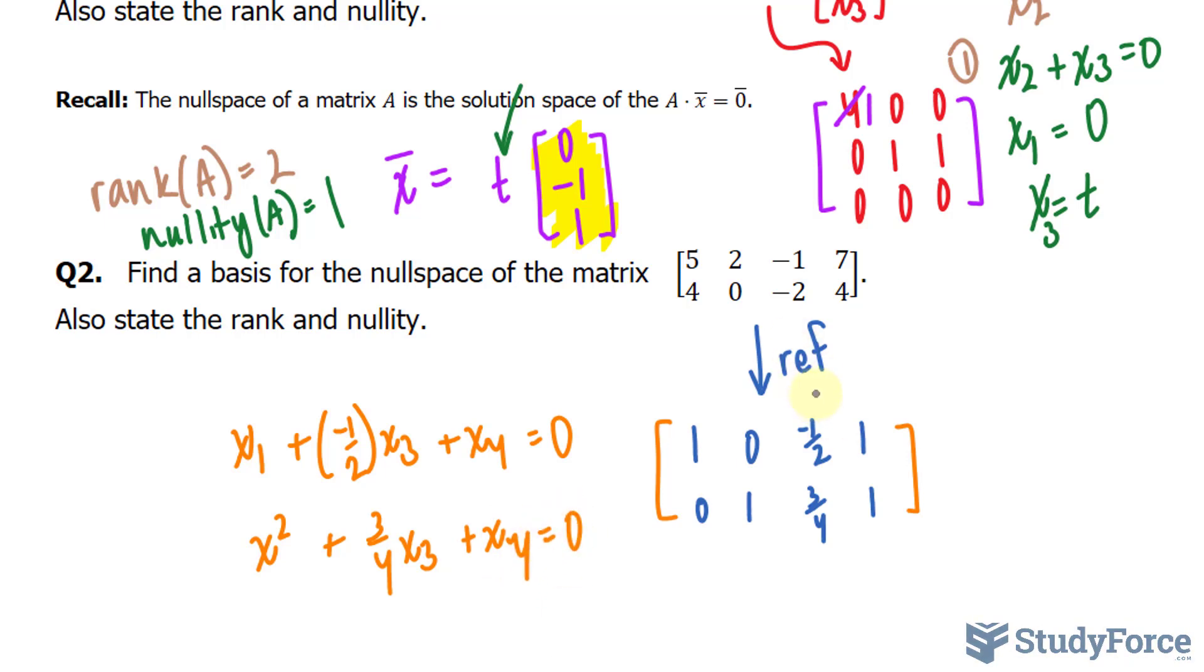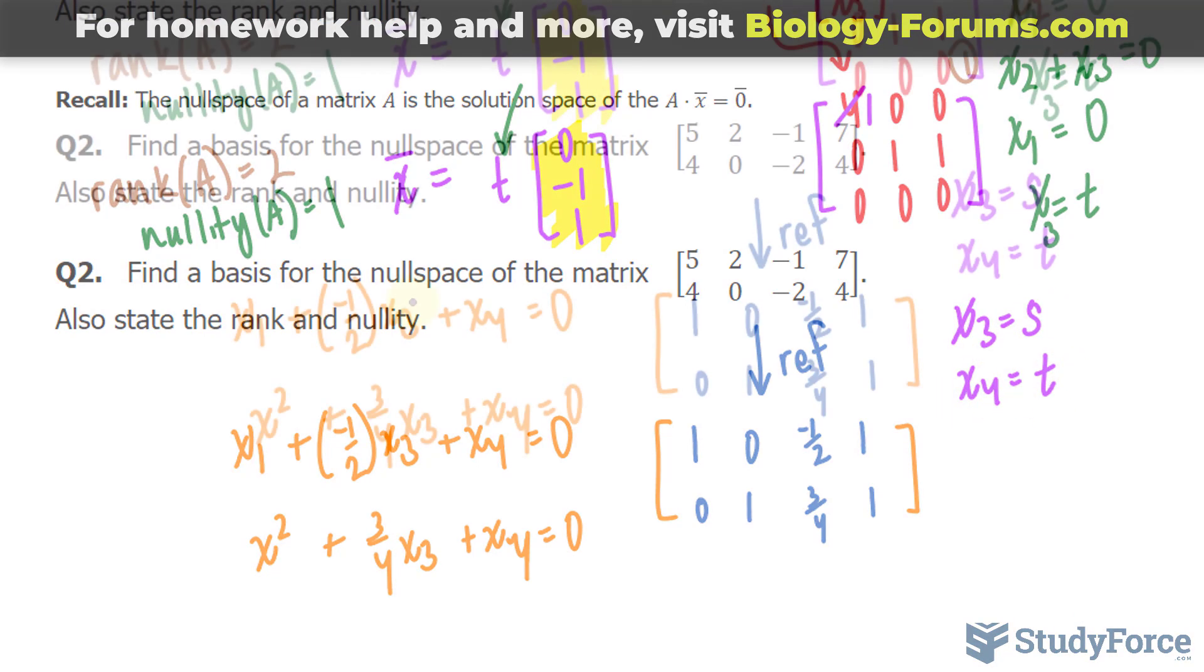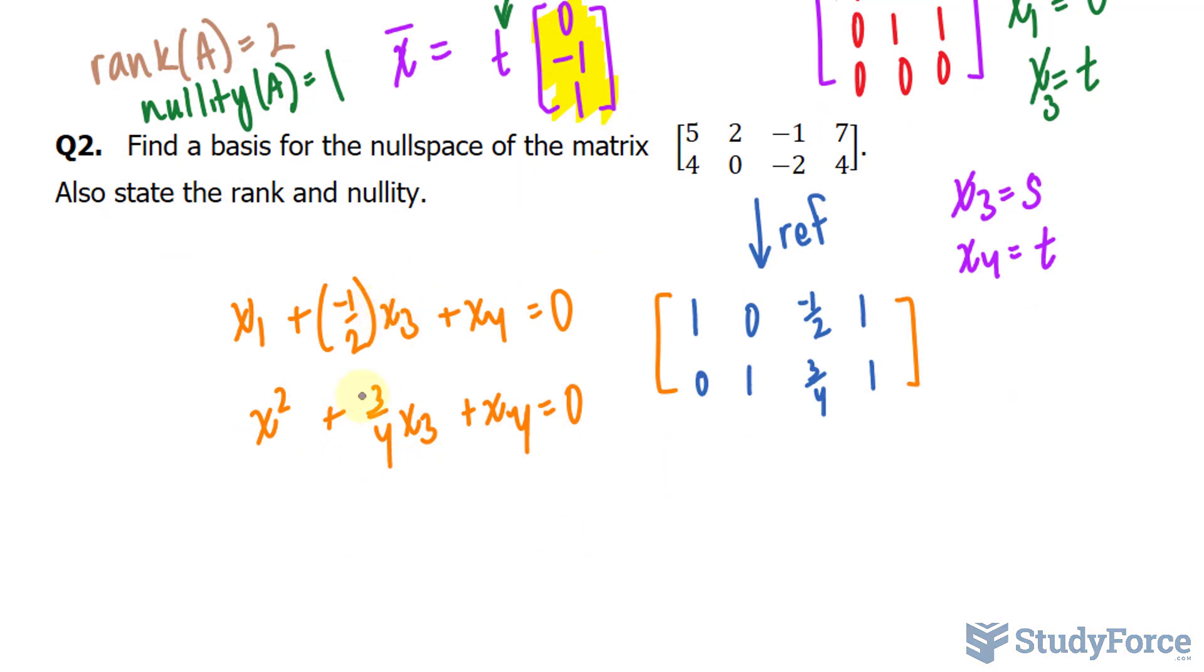The parameters here will be for this column and this column. So we'll call x sub 3 equal to s and x sub 4 equal to t. So that makes this right here, s and that t.